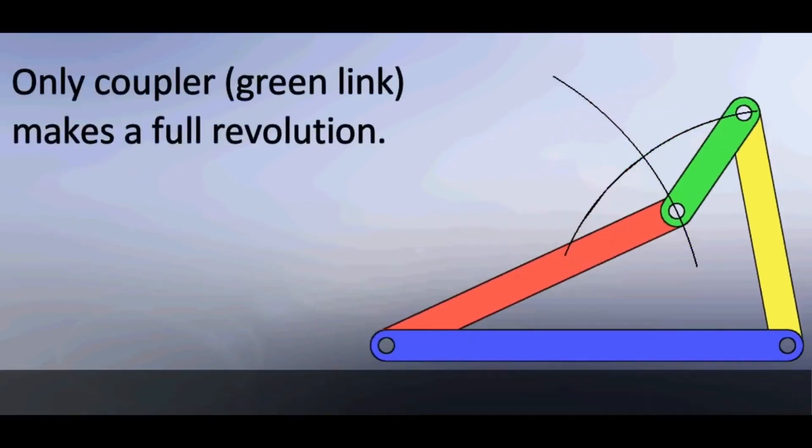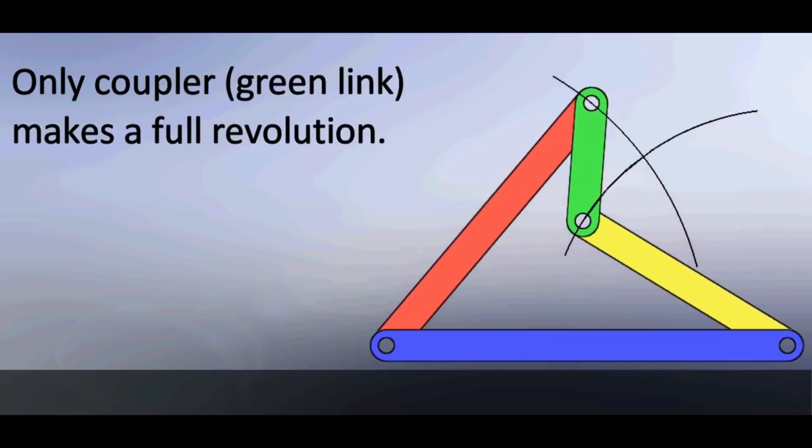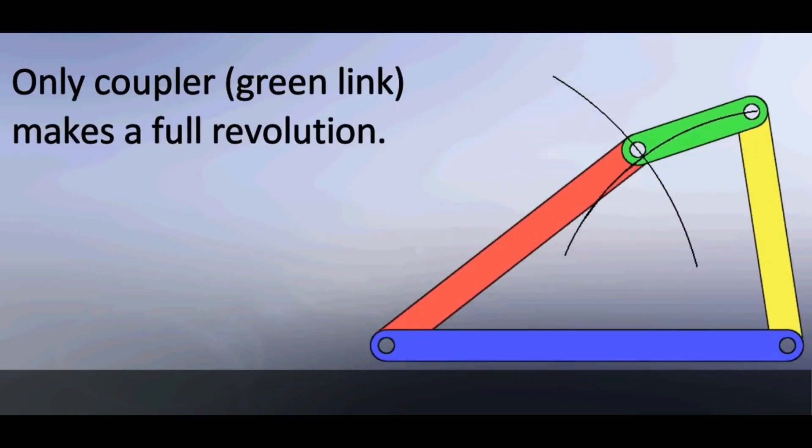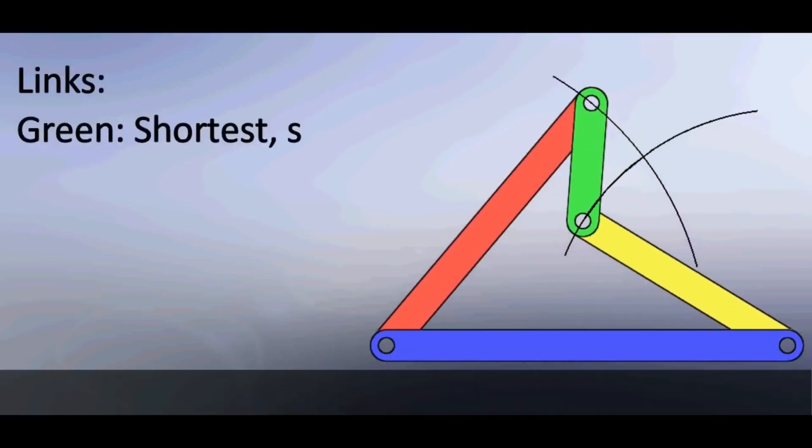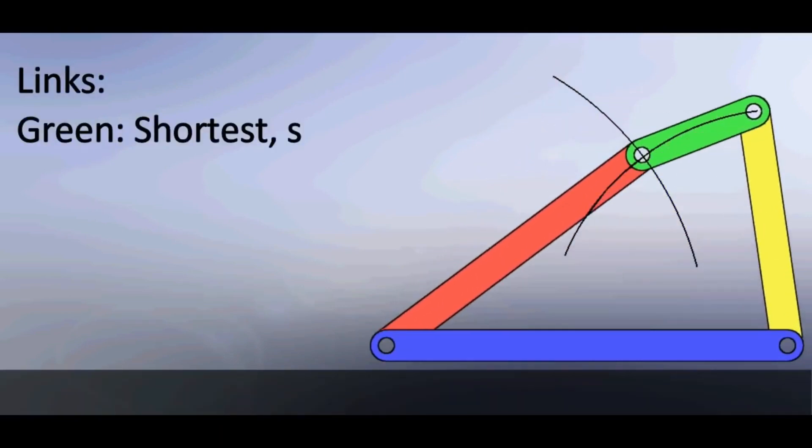Only coupler makes a full revolution. Links: green link is the shortest, let's name it by letter s.